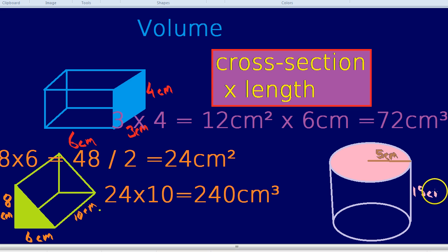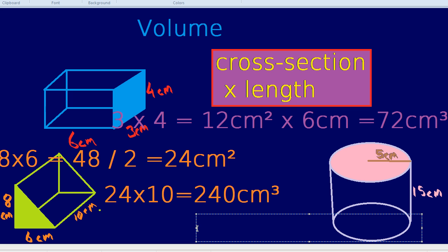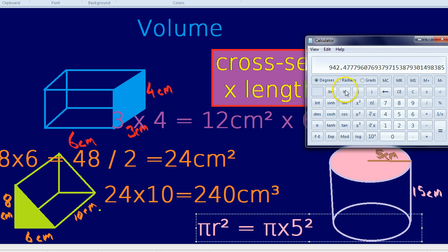What's the area of a circle again? As in a previous video, I showed that the area of a circle is pi r squared, where r is the radius. In this case, that's pi times 5 squared. 5 squared is 25. So it's 25 times by pi, which in our calculators gives us 78.54.